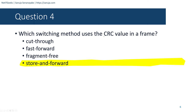Question number thirty-nine: What is a characteristic of an LLC sublayer? Options include: provides logical addressing to identify the device; provides delimitation of data according to physical signaling requirements; places information in the frame allowing multiple layer 3 protocols to use the same network interface and media; or identifies software processes that provide services to the physical layer. The correct answer is it places information in the frame allowing multiple layer 3 protocols to use the same network interface and media.